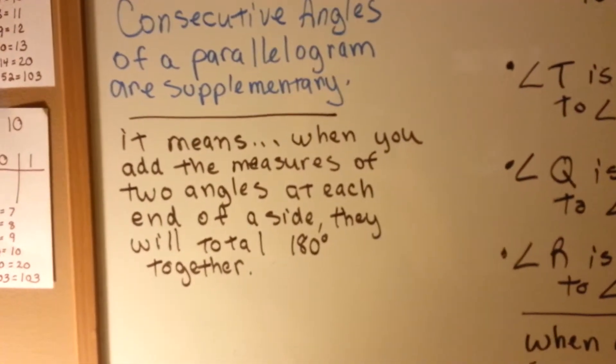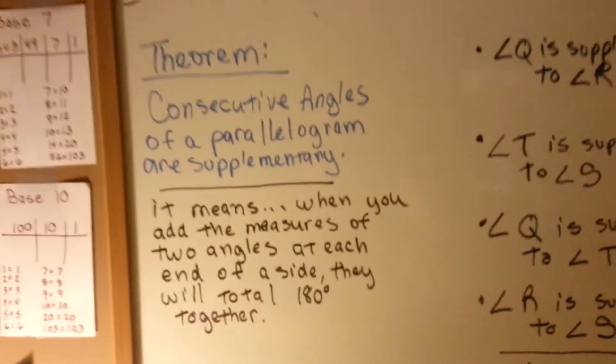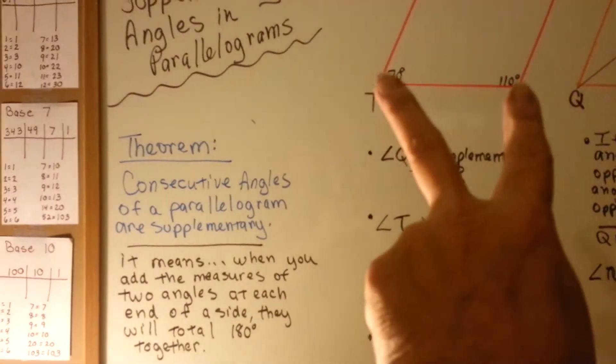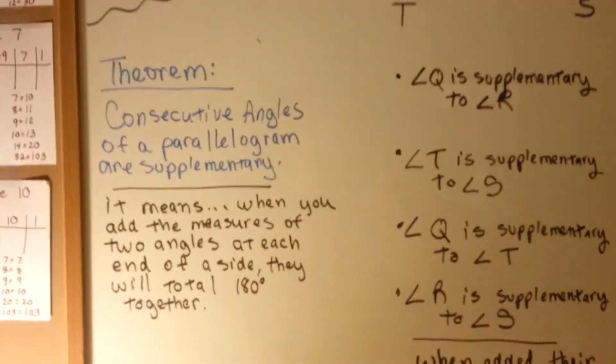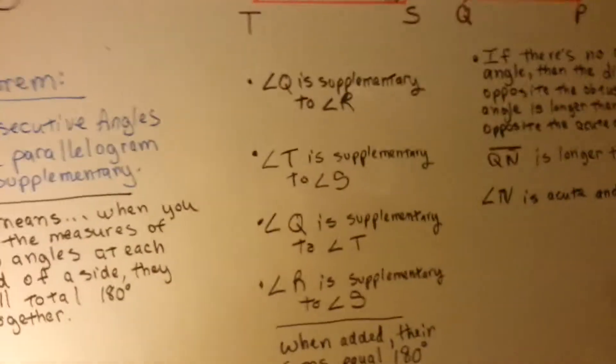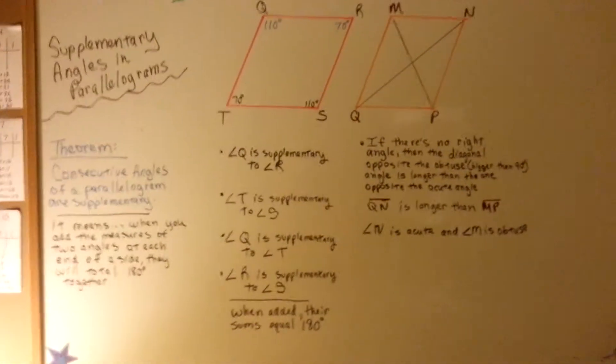It means that when you add the measures of two angles at each end of a side, see how they're on each end of a side? They'll total 180 degrees together, and that'll help you when you do proofs knowing that rule.